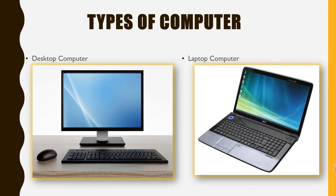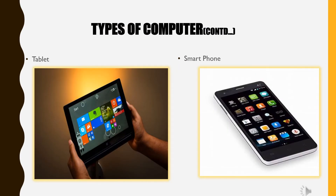Now I will tell you about the types of computer. Desktop computer is kept on a table and is big in size. Laptop computer is small in size and can be easily carried anywhere. A tablet computer is a touch screen device and smaller than a laptop. A smartphone is smaller than a tablet and can be carried in a pocket.